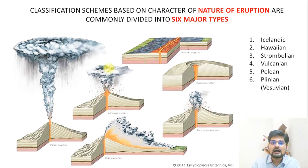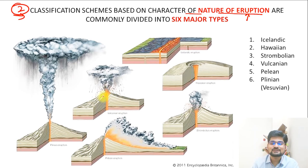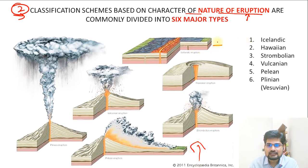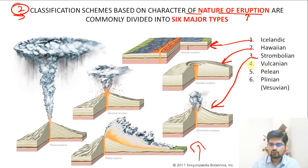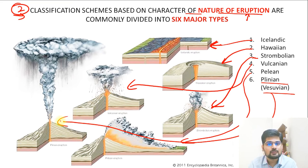The second type of classification is based on the nature of eruption — how violent the eruption is. There are six major types: Icelandic, Hawaiian, Strombolian, Vulcanian, Pelean, and Plinian (also called Vesuvian), which is the biggest type. On the basis of landforms we have five types, and on the basis of nature of eruption we have six major types.